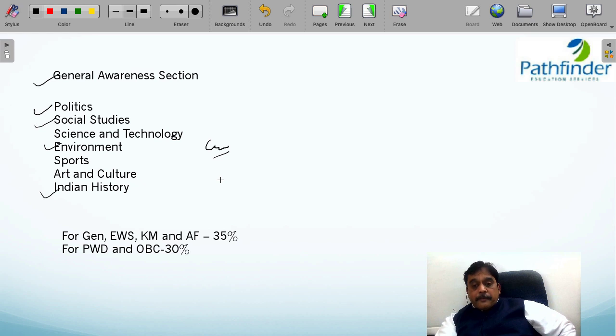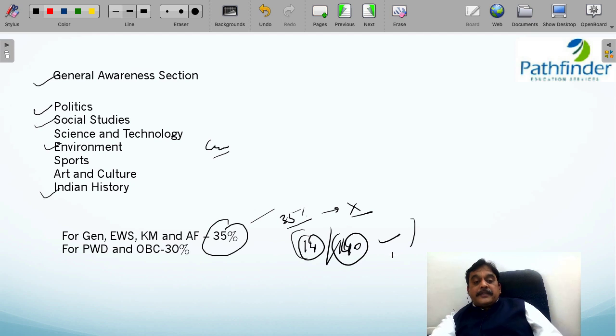And to add to this, they have a cutoff. General students, if you cannot score 35% of the marks in TISNET GK, you will not qualify. And 35% of marks means 14 questions out of 40. So if you cannot solve 14 questions out of 40, you will not qualify the TISNET exam. For some other categories, PWD and OBC categories, the qualifying criteria is 30%, that is 12 questions. In any case, you need to solve more than 14 questions correctly in the TISNET exam.